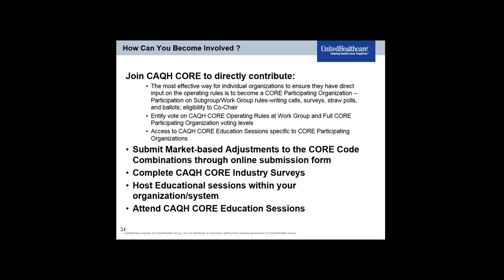How can you become involved? The most effective way for individual organizations to ensure direct input on the operating rules is to become a CORE participating organization — you can participate on subgroups, work groups, rules writing calls, surveys, straw polls, and ballots, and be eligible to be a co-chair. You can also submit market-based adjustments to the CORE code combinations through the online submission form, complete CAQH CORE industry surveys, host educational sessions within your organization, and attend CAQH CORE education sessions.